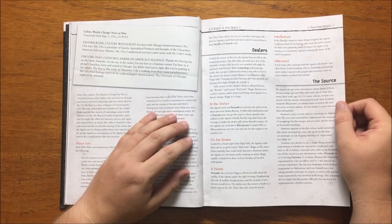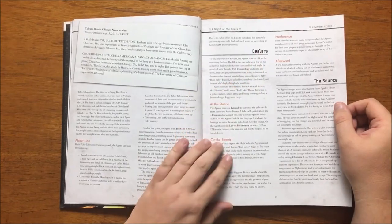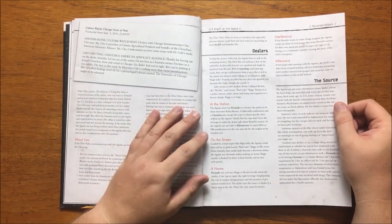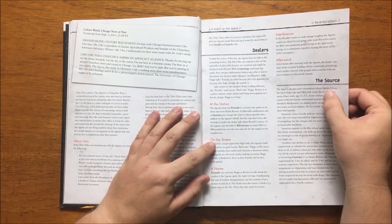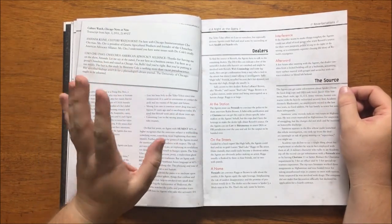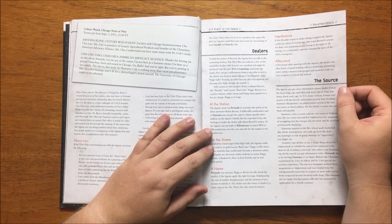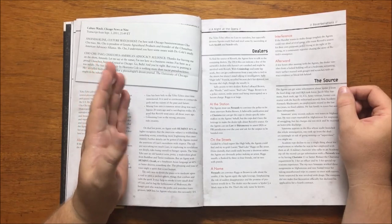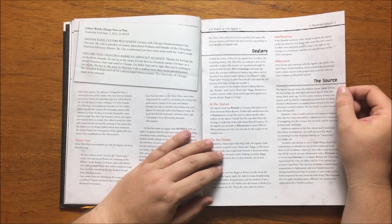To find the source of Reverb, the players need to talk to the remaining dealers. This can lead them onto High Sally or Lucian Bad Luke Riggs. These, with the right kind of questioning and persuasion, can lead onto their supplier, Spider J. Spider J, or Jacob Silas Simmons, is a US Army veteran and former contractor of a heavily armed militarized security firm called Academy. He did two tours of Afghanistan and was initially court-martialed for smuggling, but was later dropped due to a lack of evidence and he was honorably discharged.